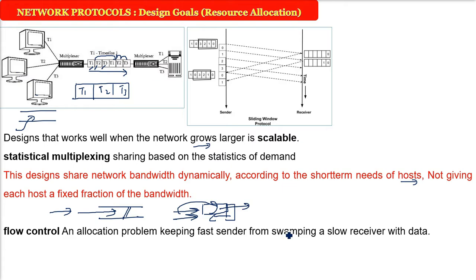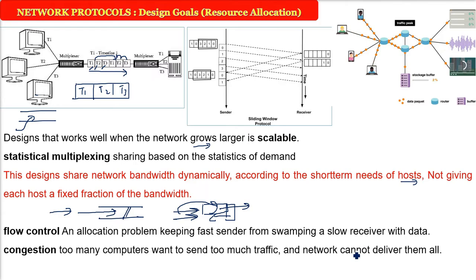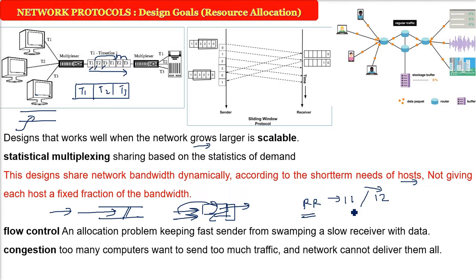Congestion happens when too many computers or machines are sending traffic and the network is not ready to deliver them all. For example, the IRCTC railway reservation website in India - at 10 o'clock when booking opens, it is a miracle if you get through. That is an example of congestion.